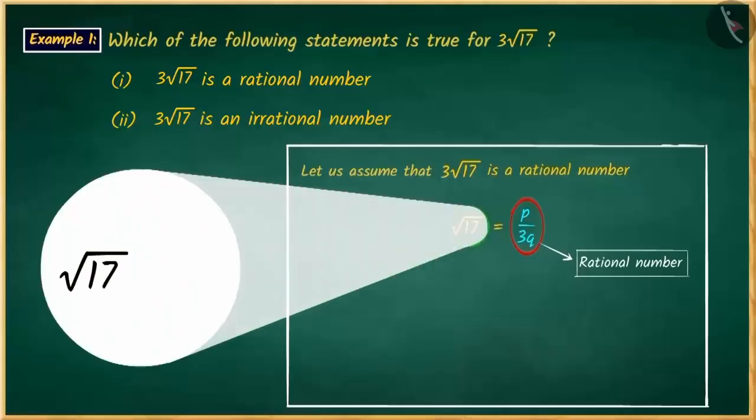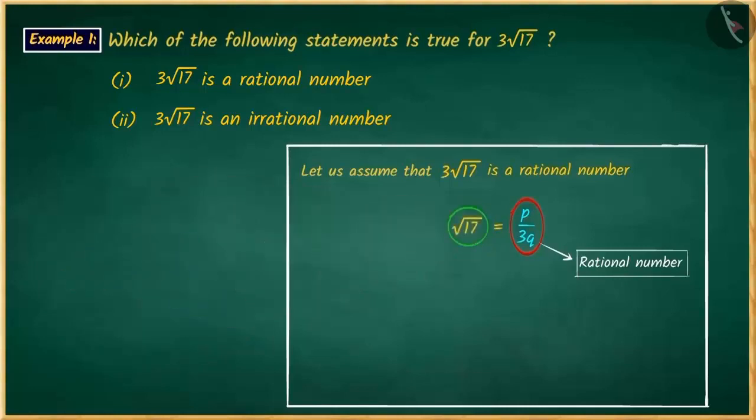Can you write √17 as p/3q? No. √17 cannot be written as p/3q. That is, it is an irrational number.